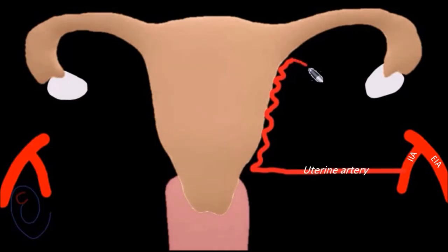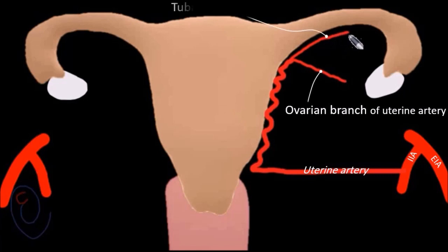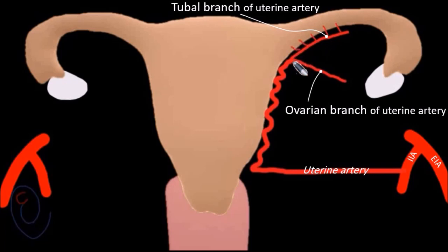The three terminal branches are: the ovarian branch, which anastomoses with the terminal branch of the ovarian artery; the tubal branch, which extends through the mesosalpinx and supplies part of the fallopian tube; and the fundal branch, which penetrates the fundal part of the uterus.